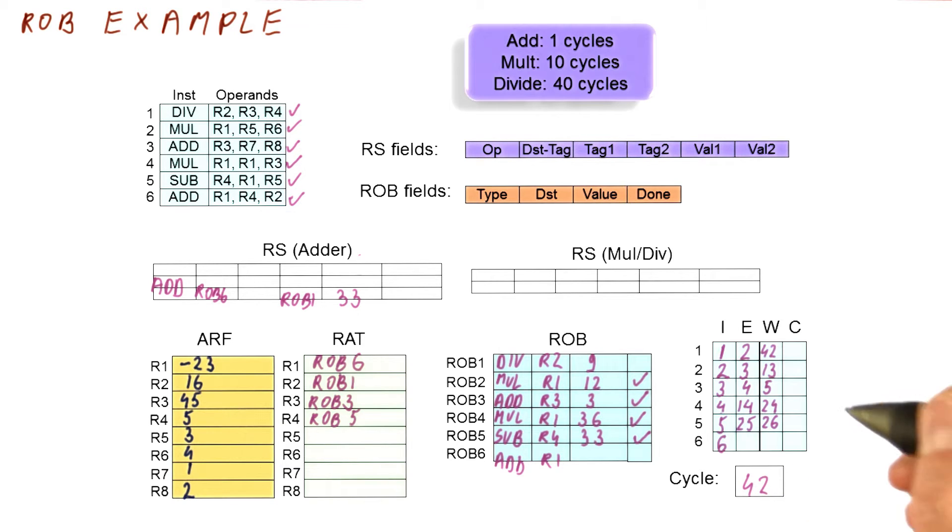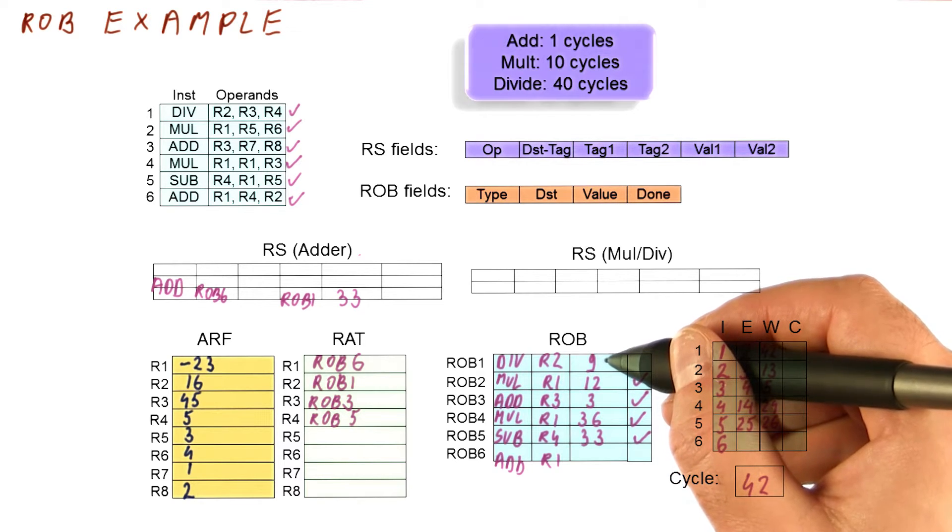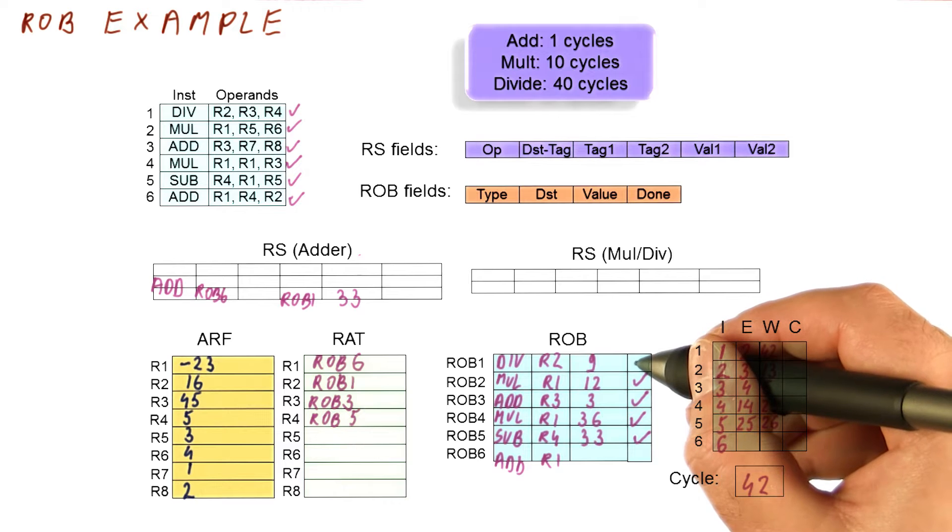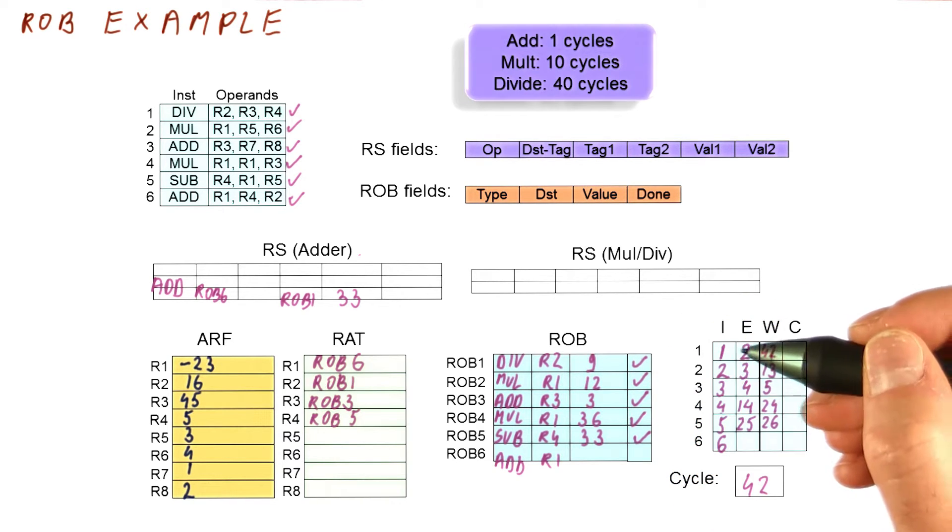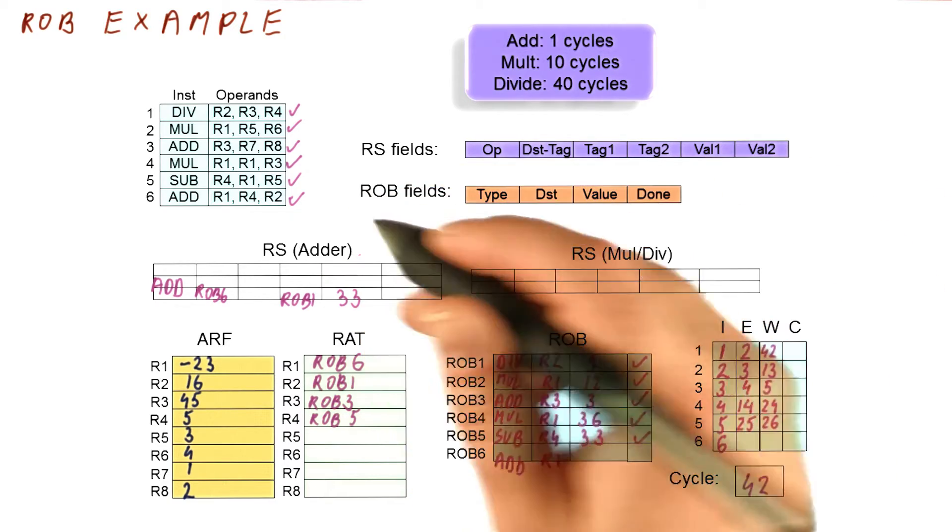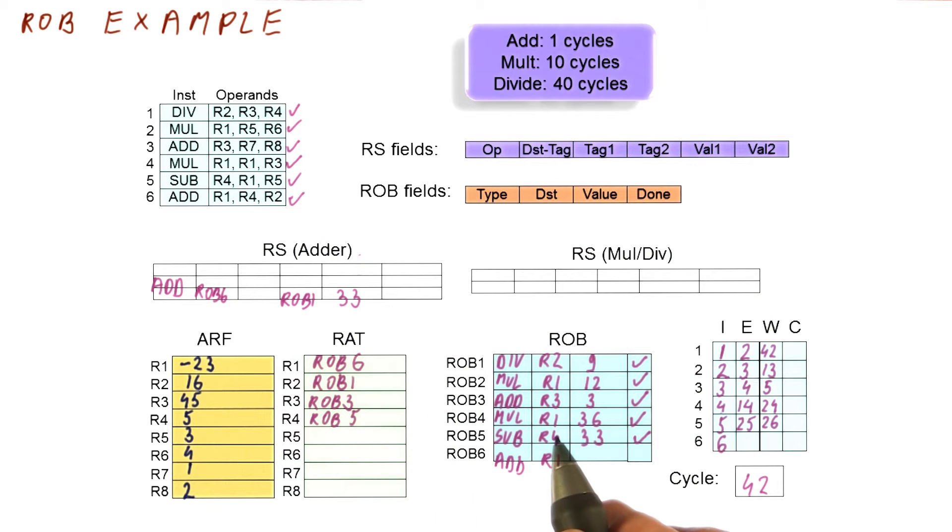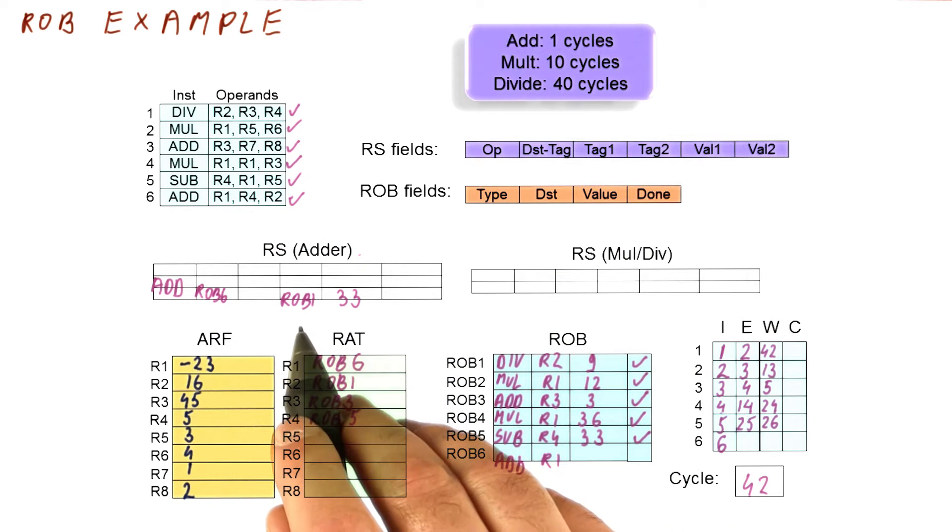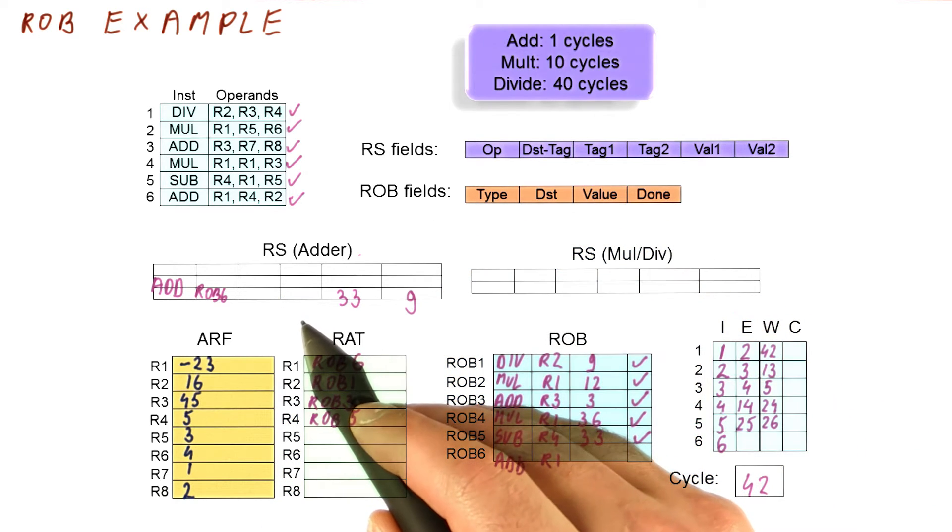So let's say we are now in cycle 42. This divide finally broadcasts the value of 9 under the name ROB1. What happens is we put the 9 here, we mark it as done, and the 9 with ROB1 tag is broadcast on the bus. And all the instructions that are waiting for that are going to capture that value. The only thing that really needs anything is this, and it captures the value of 9 and is no longer waiting for anything.